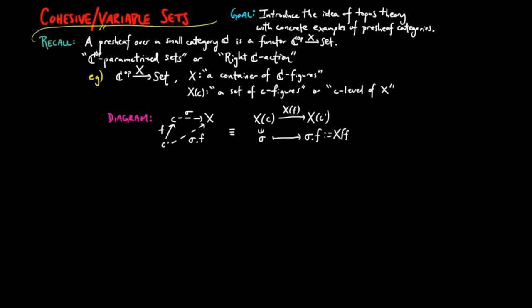This is defined to be XF evaluated on sigma. Note that sigma dot F dot G is equal to sigma dot the composition of F and G, and sigma dot identity is sigma. You can think of these as the axioms for a right action by a category.